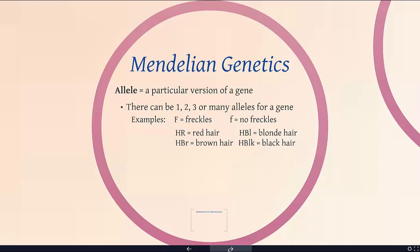Here is a highly simplified version of hair color. We have four different hair colors, and we have four different alleles. In your genotype, you always have two alleles, and it could be that they're the same or that they're different. So you could have two big F's, two little f's, or one big F and one little f.